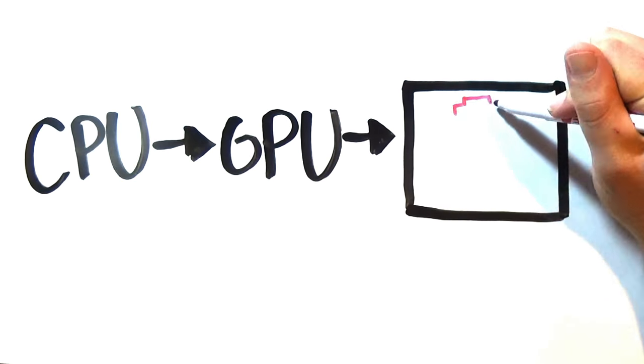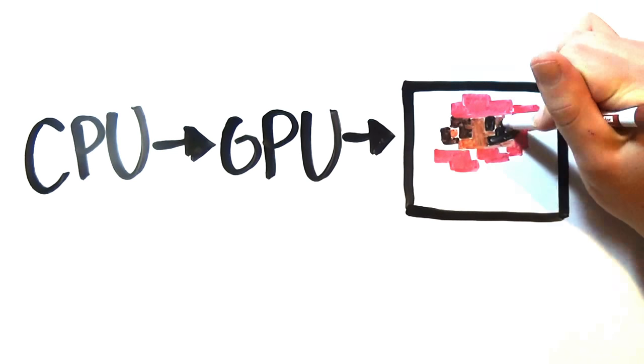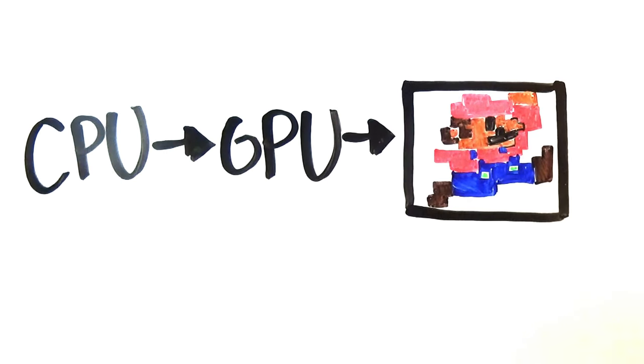The workings of graphics cards rely on translating binary code from the computer's central processing unit, or CPU, to color in on-screen pixels.